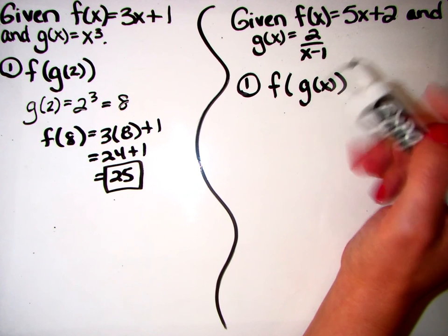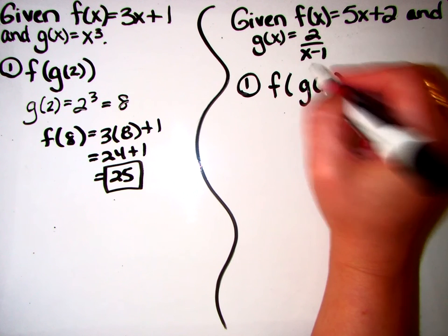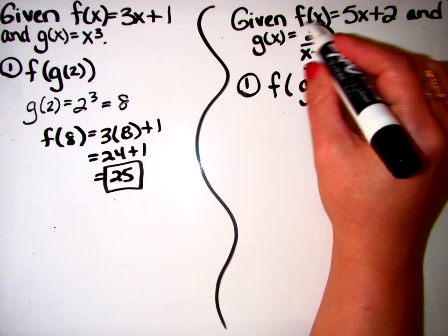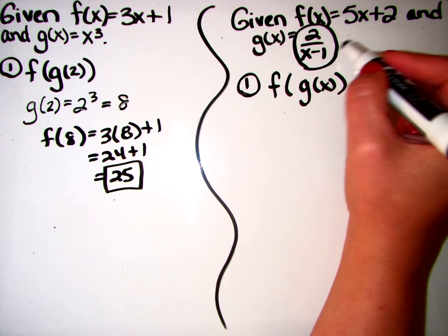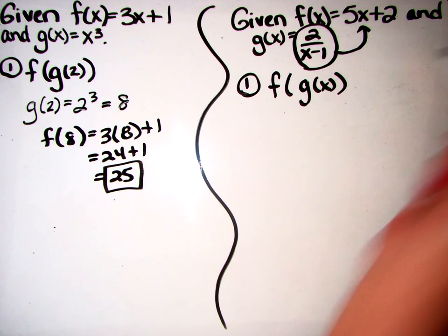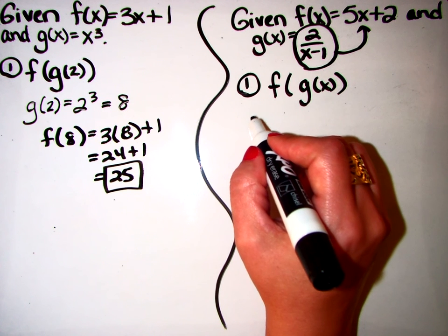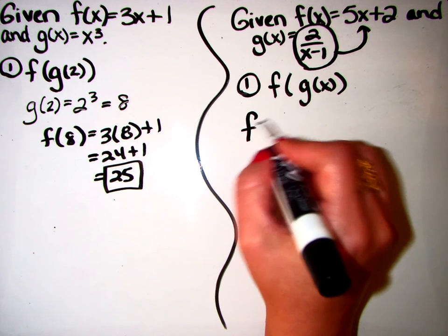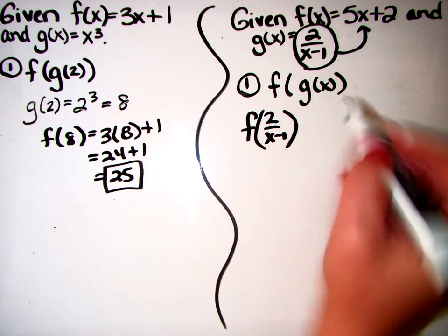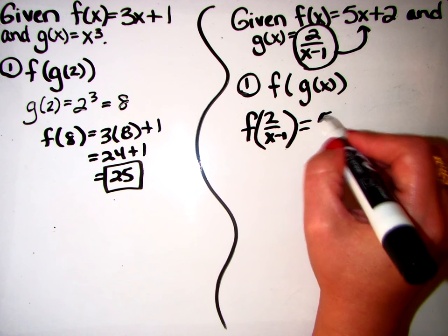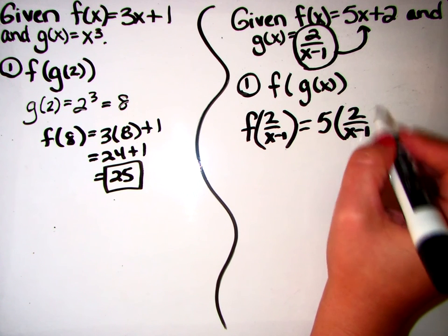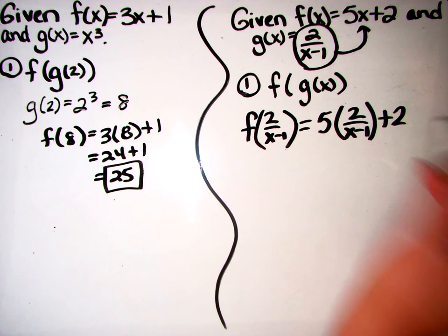So you are literally going to pick up whatever is inside your parentheses, so you're going to pick up g of x and you are going to go drop it off right there in f of x. So f of 2 over x minus 1, because that represents g of x, is equal to 5 times 2 over x minus 1 plus 2.